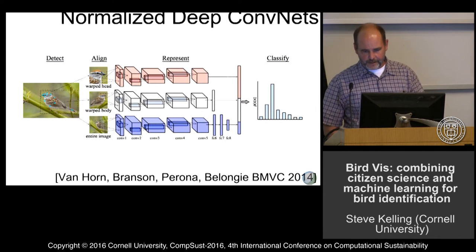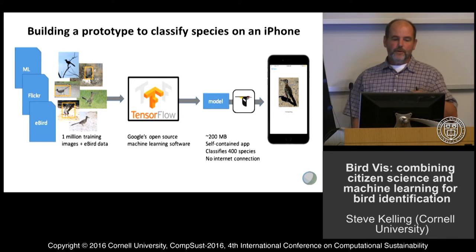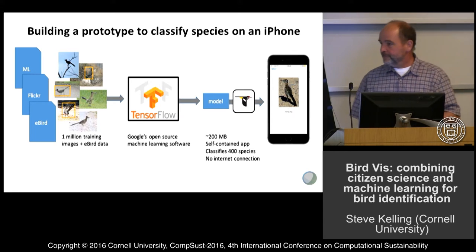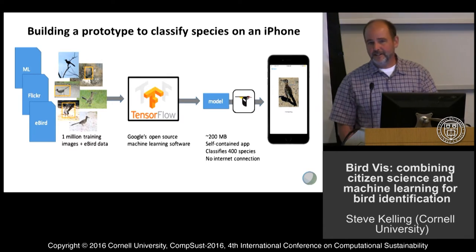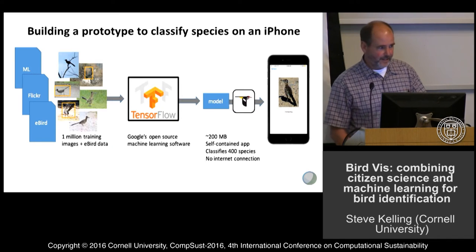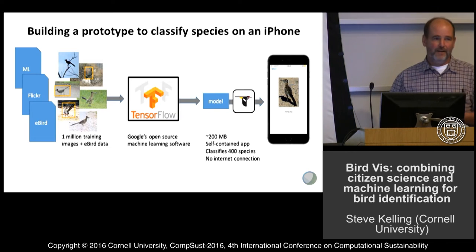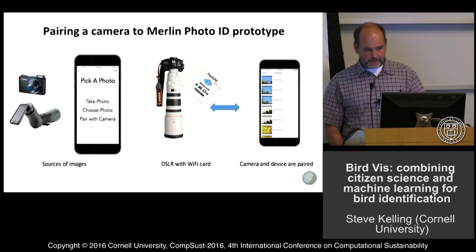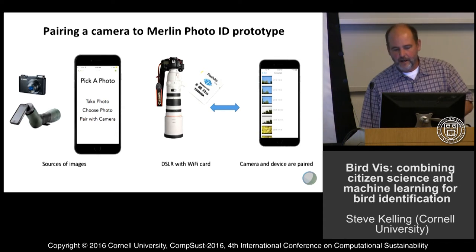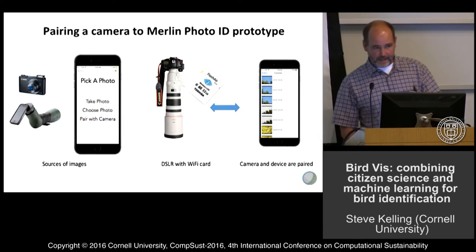Now we're taking this approach and applying it in a real setting. We've taken all of our images and trained a model with Google's TensorFlow software package, which has given us approximately a 200-megabyte file that allows us to identify up to 400 species of birds in North America. That's small enough to put on an iPhone. Our goal is that with any camera using Wi-Fi or your iPhone connected to a scope, you can take a picture and this application will identify the bird.